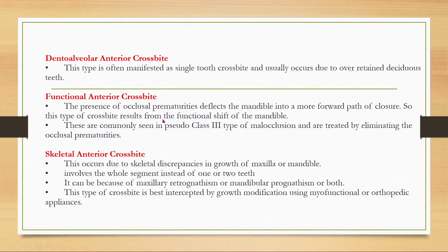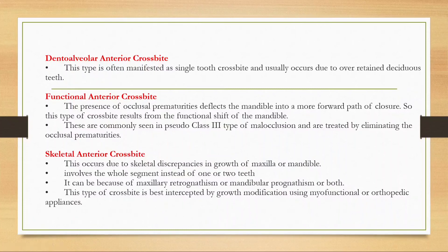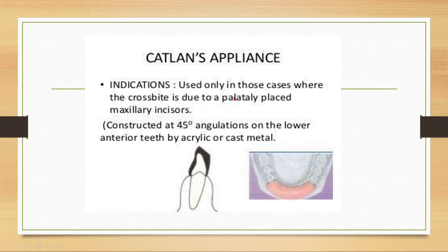Functional crossbite results from a functional shift of the mandible and is commonly seen in pseudo class III — it can be easily treated by eliminating the occlusal prematurities. Skeletal anterior crossbite occurs due to skeletal discrepancy of the maxilla or mandible, with the whole segment affected rather than one or two teeth. It is caused by maxillary retrognathism or mandibular prognathism and is best intercepted through growth modification using myofunctional or orthopedic appliances. Catalan's plane is indicated where crossbite is due to palatally placed maxillary incisors and is constructed at 45 degrees on the lower anterior teeth using acrylic or cast metal.